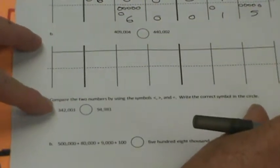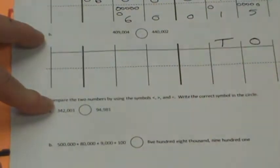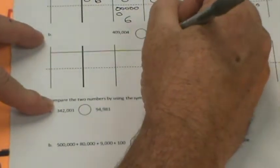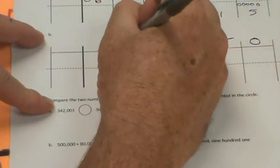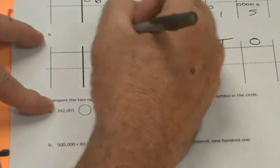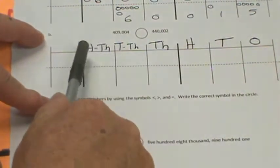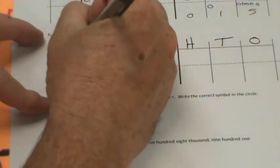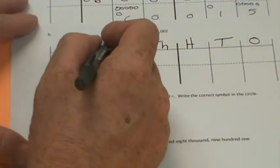Let's check our next one and we'll label the place value chart. Ones, tens, hundreds, we should be pros of this by now. Thousands, ten thousand, hundred thousand, and million.